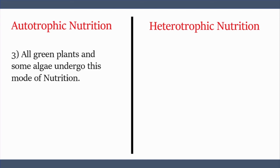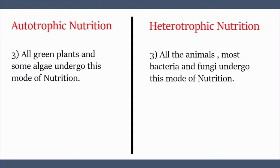Number three: in autotrophic nutrition, all green plants and some algae undergo this mode of nutrition. On the other hand, all animals, most bacteria and fungi undergo this mode of nutrition.